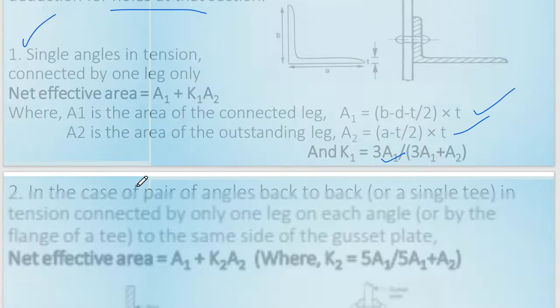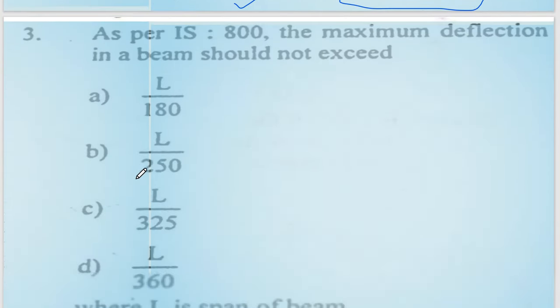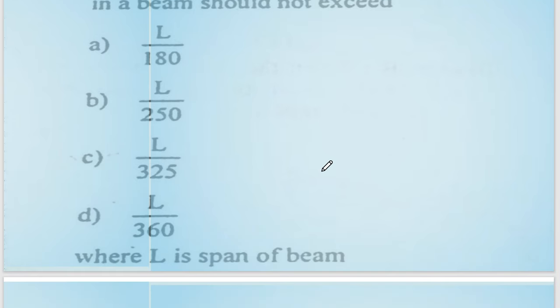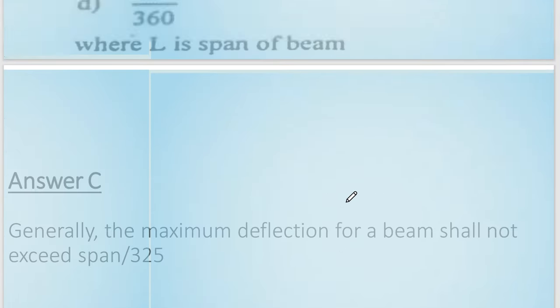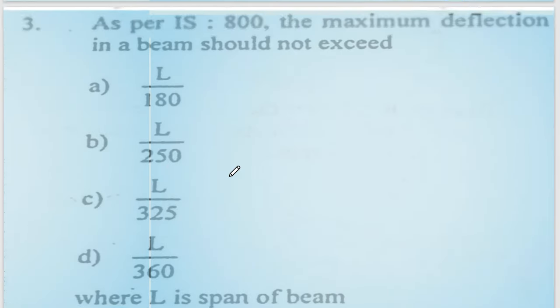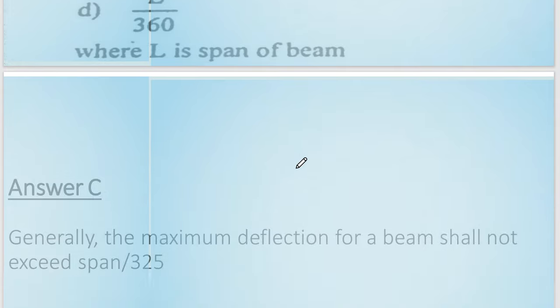Next, a common question: as per IS-800, what is the maximum permissible deflection in a beam, where L is the span? Generally, the maximum deflection for a beam shall not exceed span divided by 325. Option number C is correct as per IS-800.